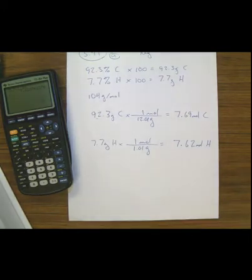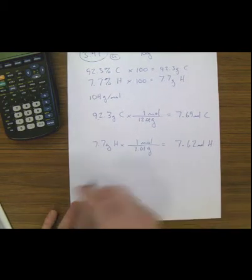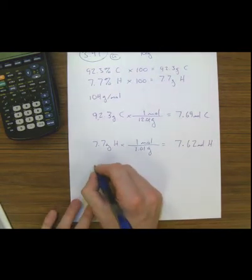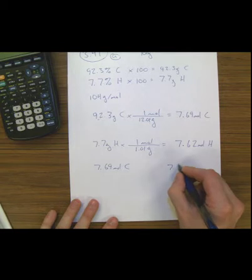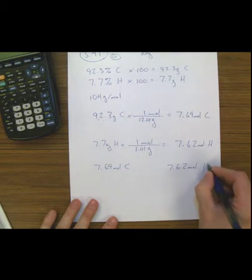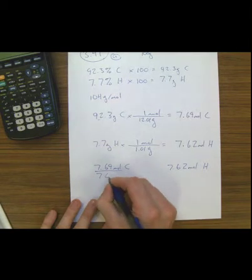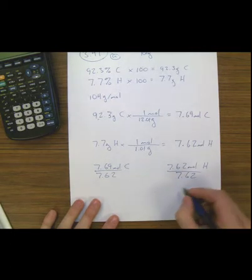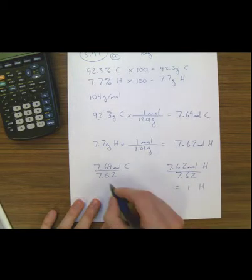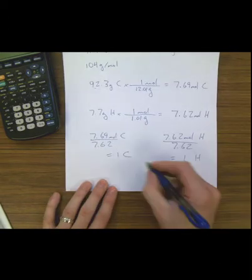The next step is to divide by the smallest value. We take 7.69 moles of carbon and 7.62 moles of hydrogen. The smallest number is 7.62, so we divide each by 7.62. This gives approximately one hydrogen and one carbon, meaning the empirical formula for this problem is CH.